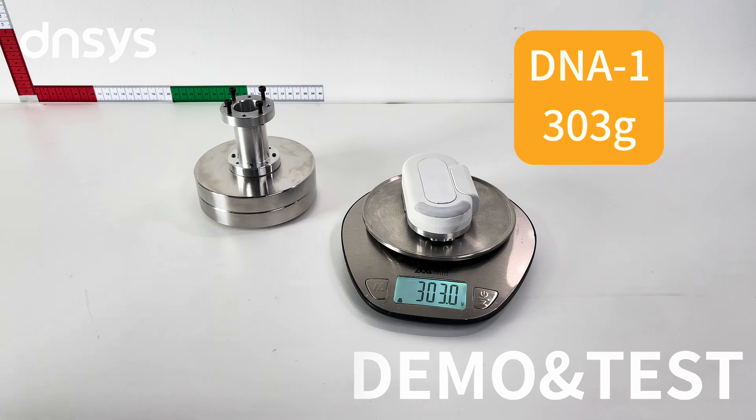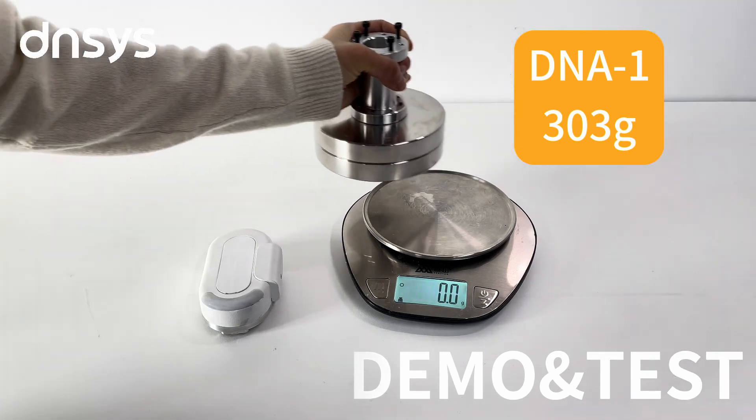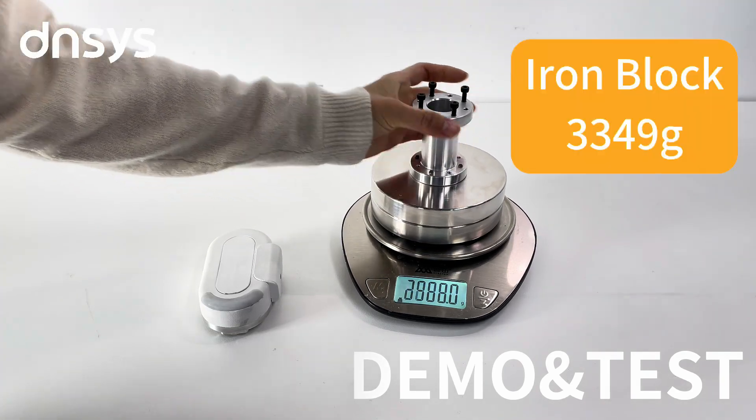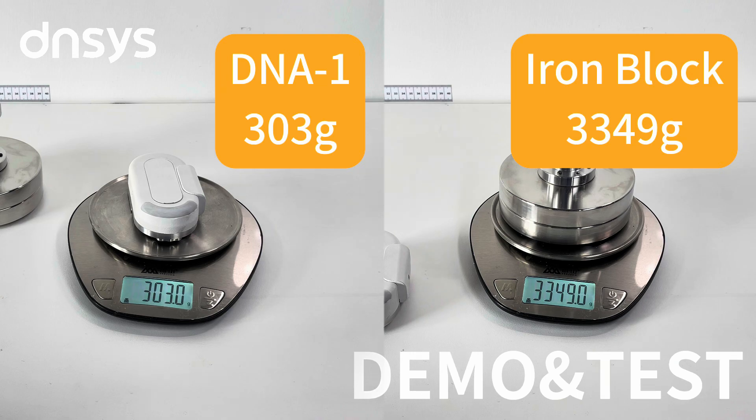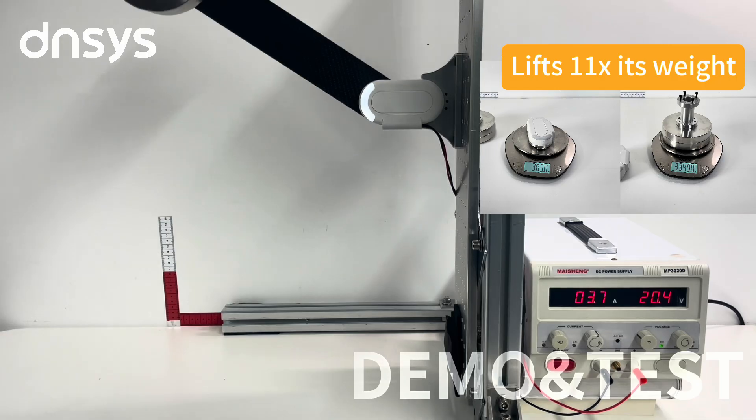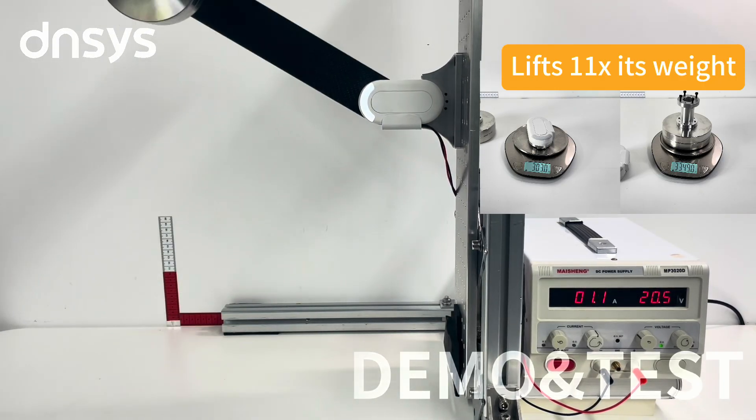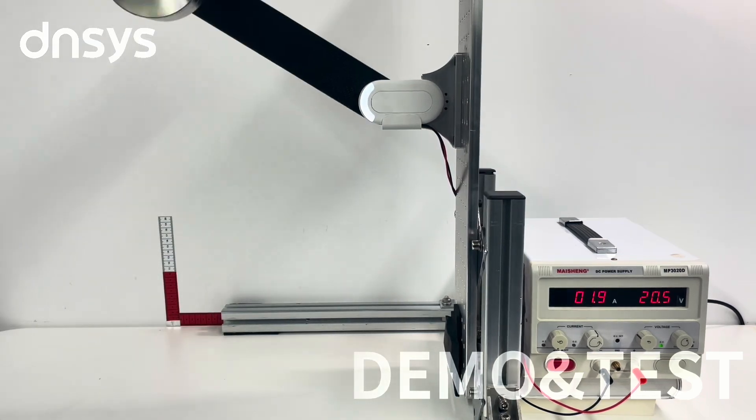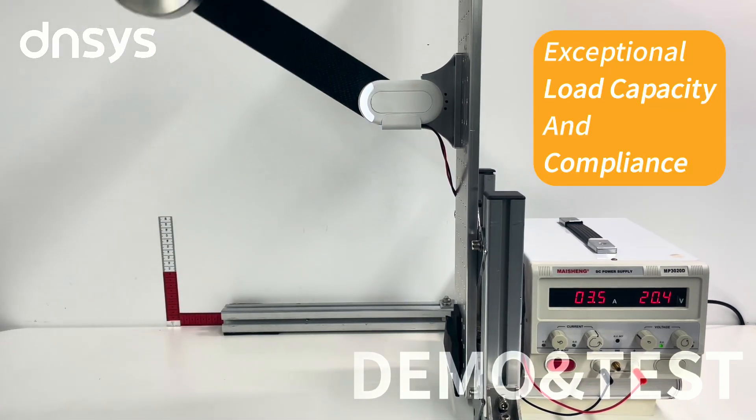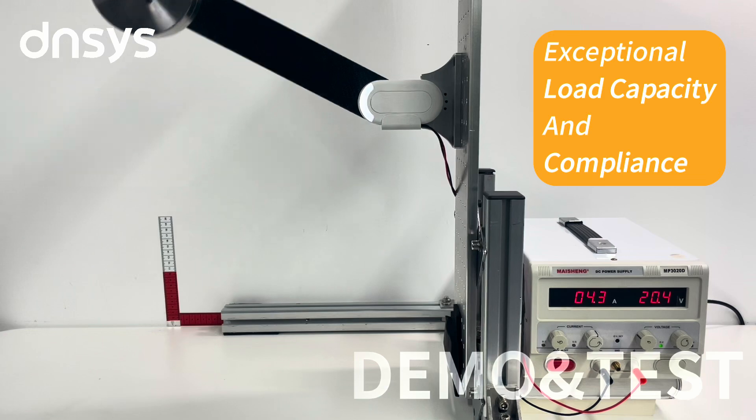The DNA1 motor itself weighs 303g, but it can easily lift an iron block weighing 3,349g, which is over 11 times its own weight. This showcases the DNA1 motor's exceptional load capacity and compliance.